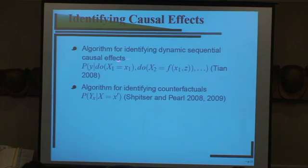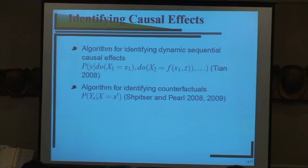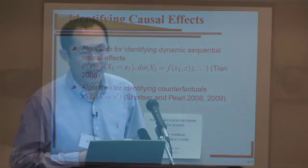Recent results extend to more complicated types of interventions, such as conditional interventions, randomized interventions, and sequences of different intervention types. We now have algorithms to identify such dynamic sequential causal effects. Elias also showed algorithms for identifying counterfactuals. In conclusion, I gave a review of the state of the art in identifying causal effects. Pearl and his students have played a central role in establishing these results, and I'm very happy and honored to have been part of that team.